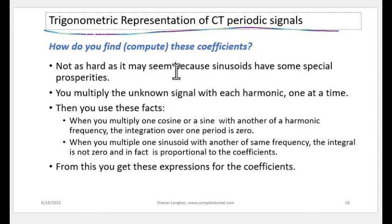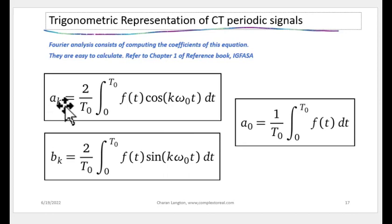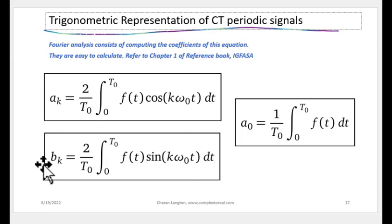To find the Fourier series coefficients, you multiply the target signal by a cosine and a sine at each harmonic frequency, then integrate over one period. The result gives the coefficients. The ak coefficients come from multiplying by cosine of each harmonic and integrating over the period. The bk coefficients come from doing the same with sine. The coefficient a0 is simply the area under the signal over one period.